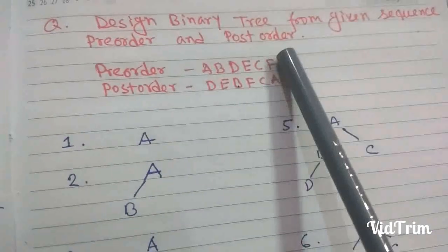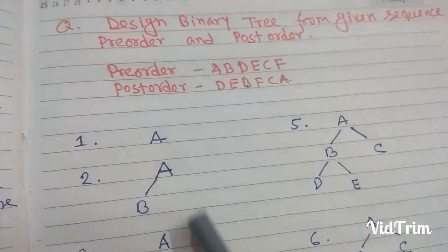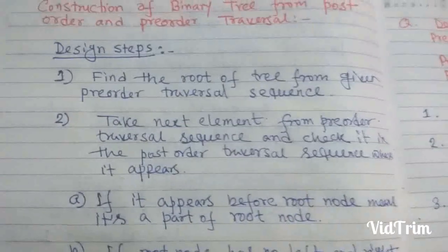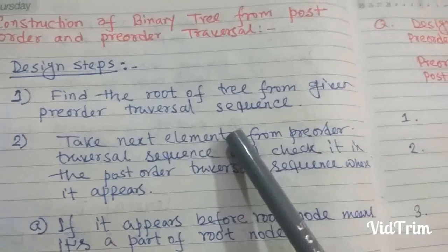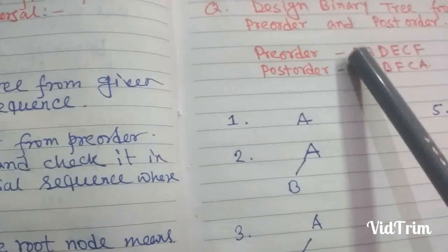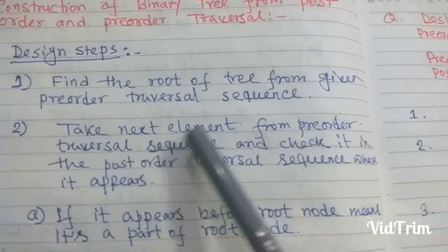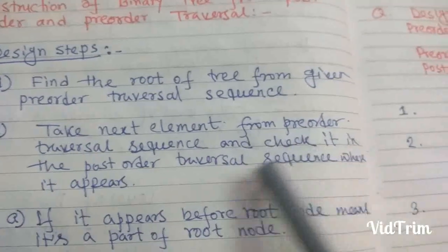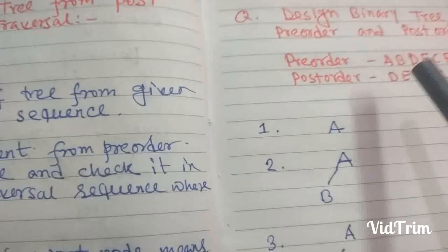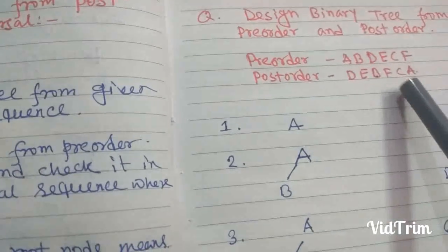To understand this, let us take an example: design a binary tree from given pre-order and post-order sequences. This is the pre-order and this is the post-order. The first step is to find the root from the pre-order traversal sequence — so A is the root. Now the second step: take the next element from pre-order, which is B, and check where it appears in the post-order sequence. B appears before A.